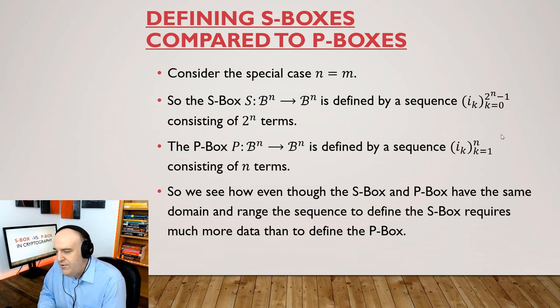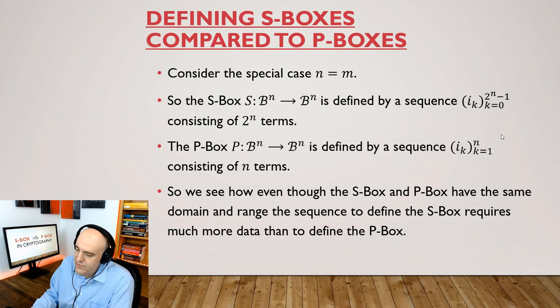Why don't we just look at the special case where N is equal to M. So both our S-Box and our P-Box go from BN to BN. So the sequence or list that we use for this S-Box will contain two to the N terms. But the sequence used for the P-Box will only take N terms. So we see that even though these S and P-Boxes have the same domain and range to describe them, the S-Box requires a lot more information than a P-Box. The P-Box only needs N terms to completely describe it, but the S-Box requires two to the N terms.